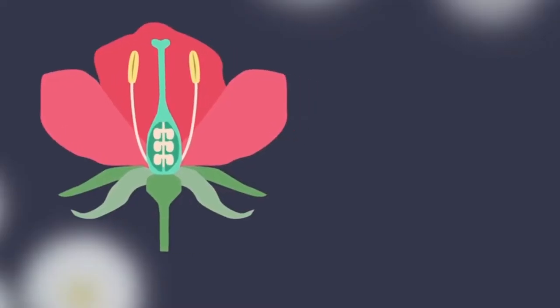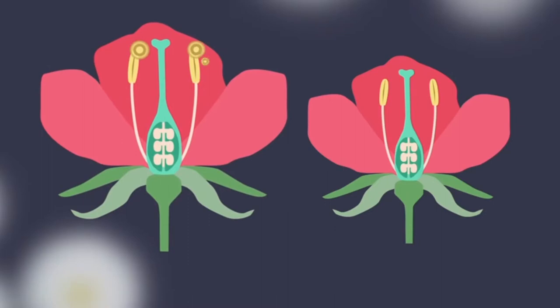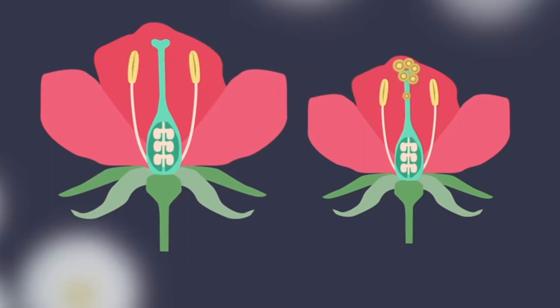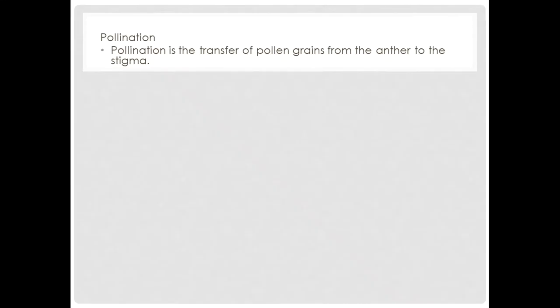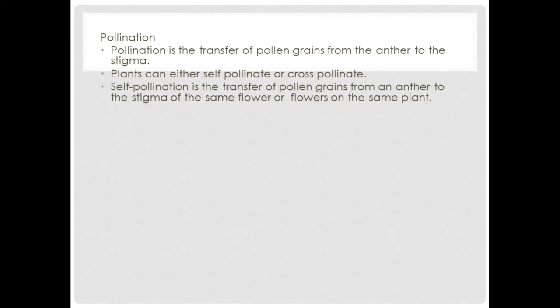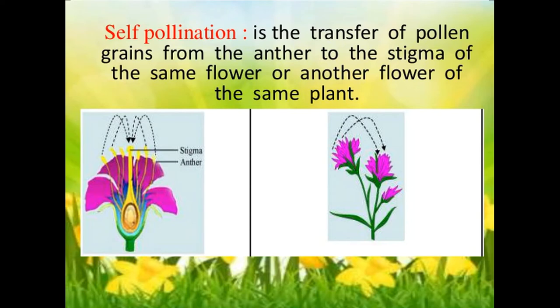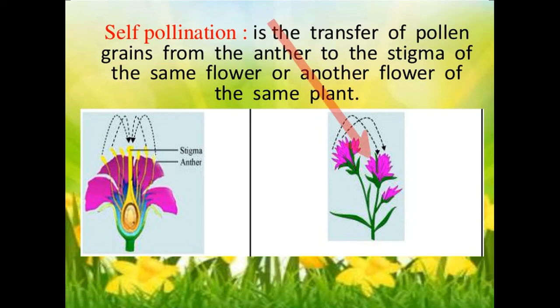So let's take a look at pollination. Pollination is the transfer of pollen grains from the anther to the stigma. Plants can either self-pollinate or cross-pollinate. Self-pollination is the transfer of pollen grains from an anther to the stigma of the same flower or flowers on the same plant.